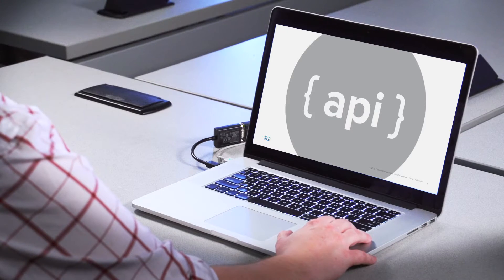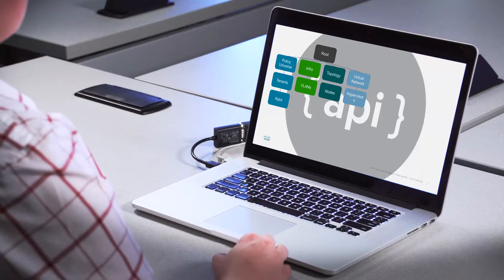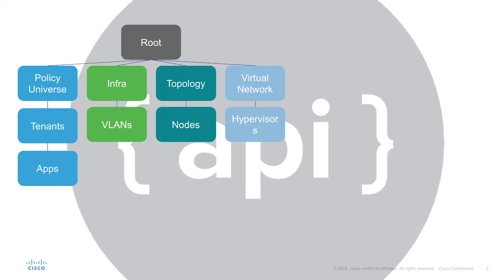The first thing to understand is that everything in ACI — logical, virtual, or physical — is an object. This is what we call the MIT, or the Management Information Tree. And we have to be able to access these objects somehow, so we need to know their location. If you're familiar with browsing the internet, then this will definitely not be a foreign concept to you.